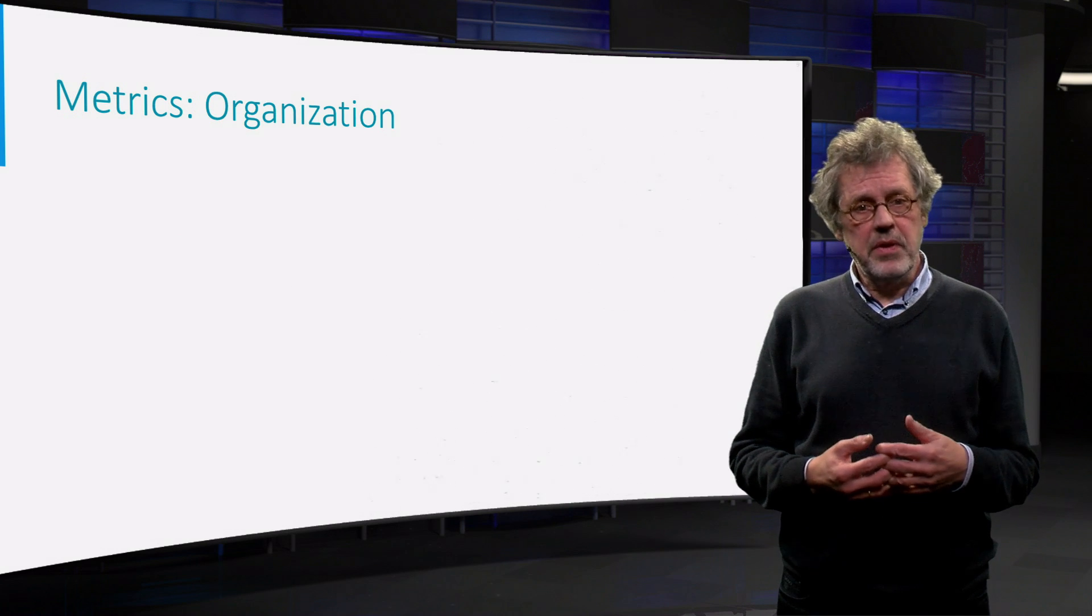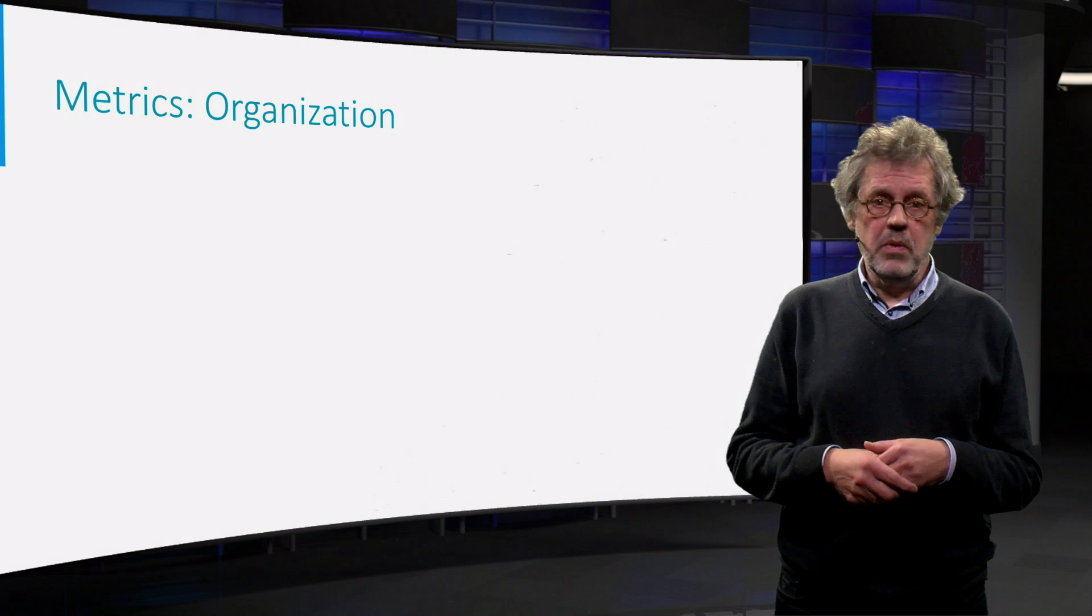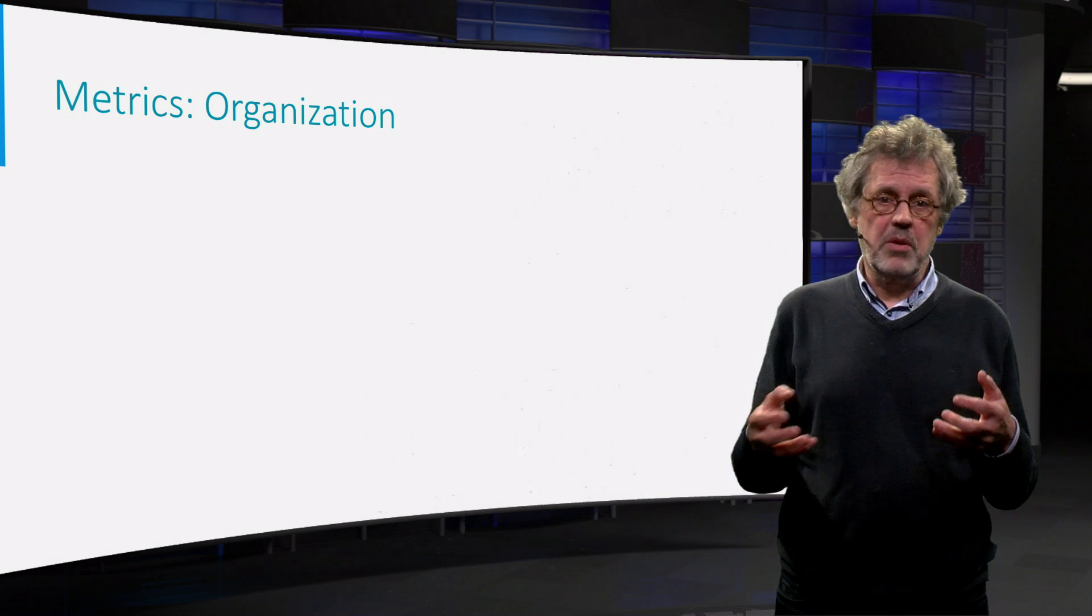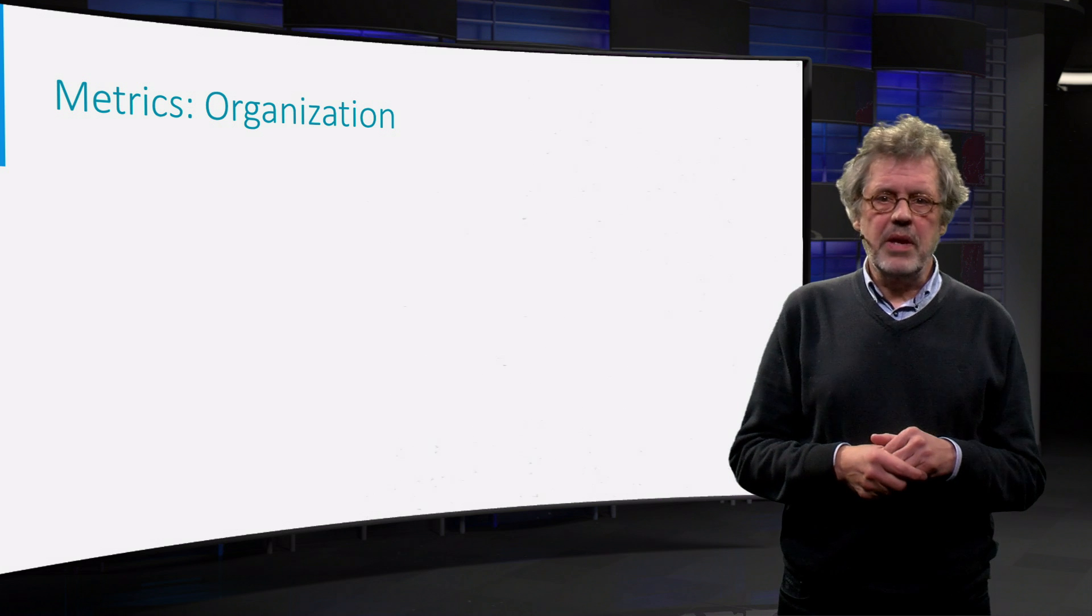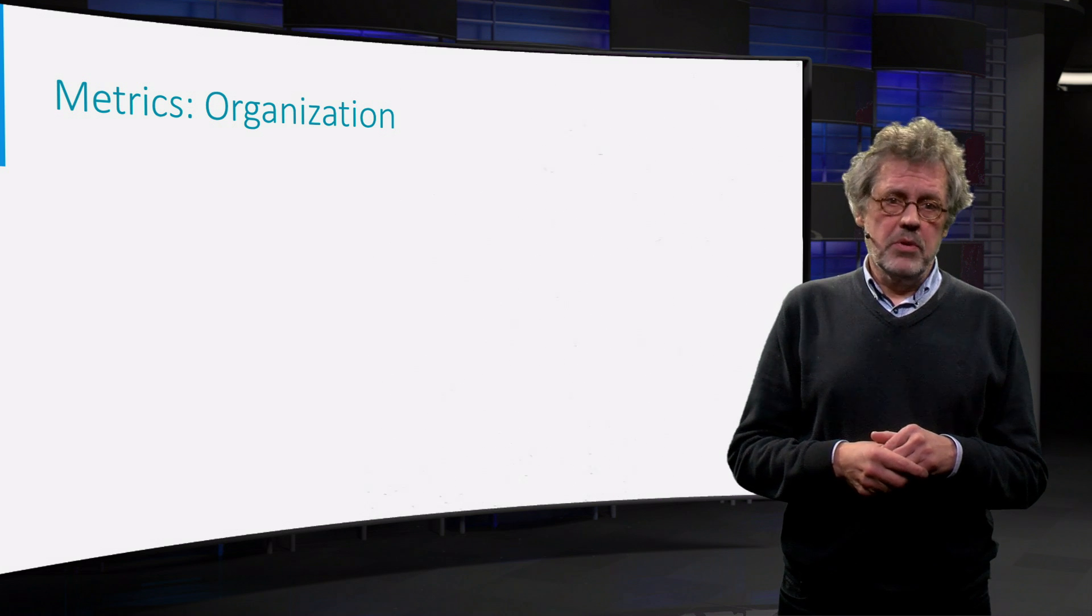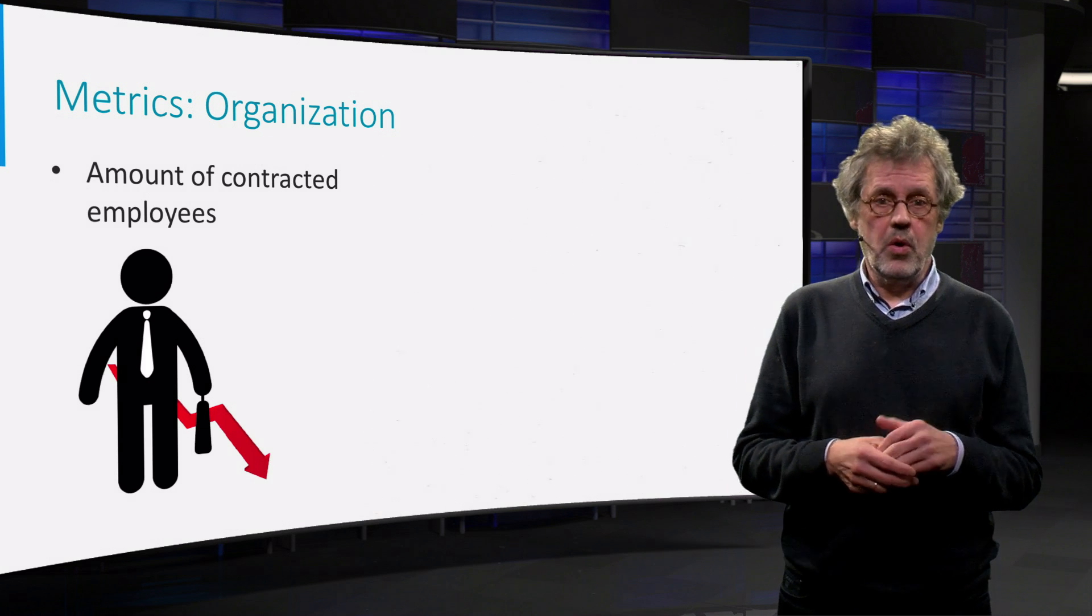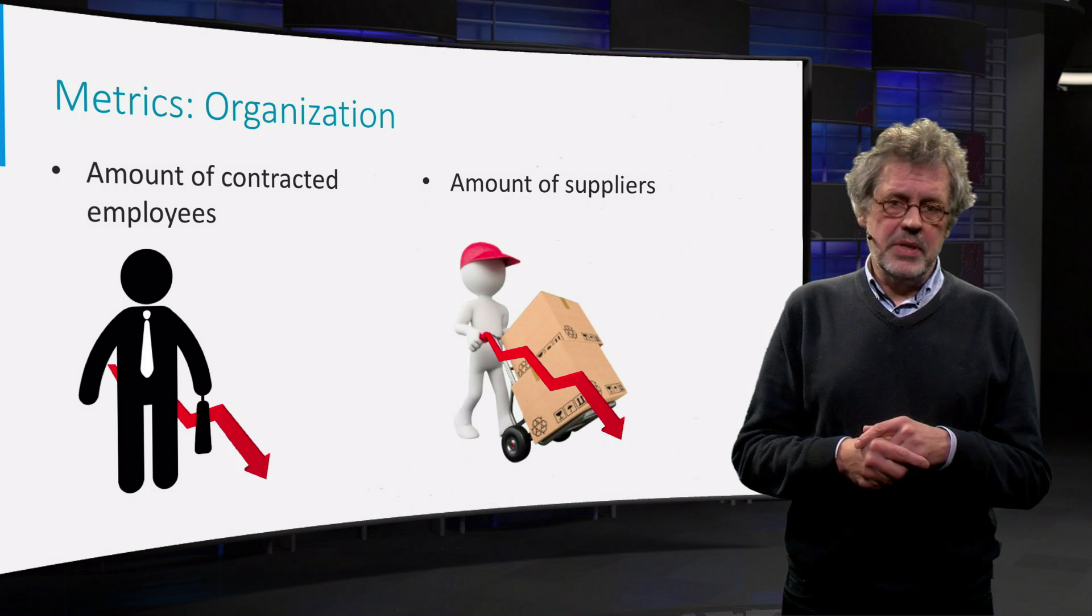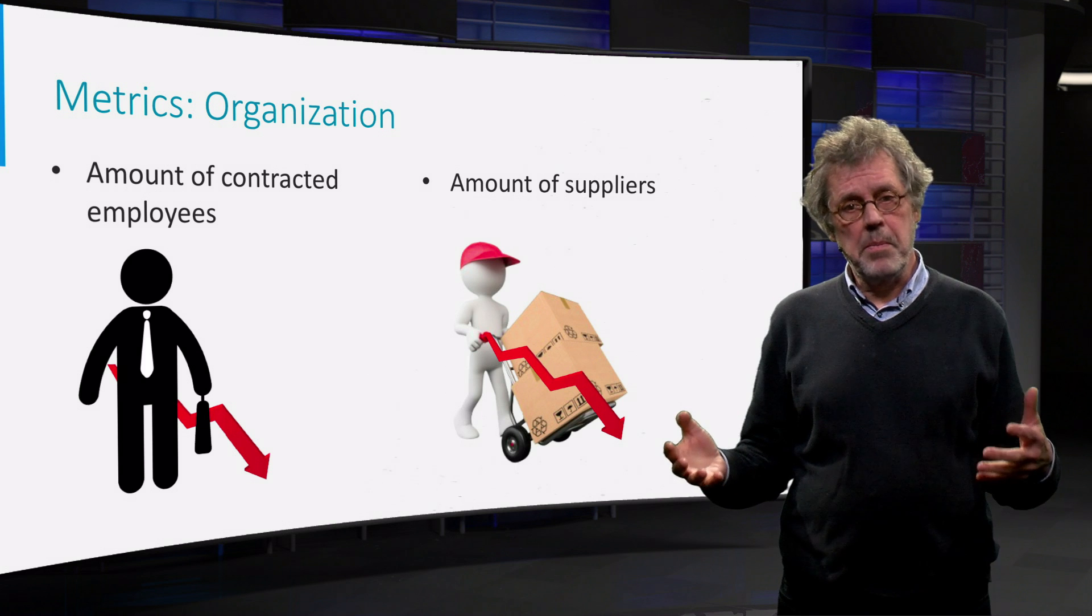Metrics can also be related to key activities within the organization. For example, the number of people needed with some specific skills, as for instance expressed in the proportion of marketing employees or the number of big data experts. Other examples are a reduction of the number of people temporarily hired, or a reduction of the number of suppliers. A classic example is Dell, that used to have 200 suppliers but succeeded to bring this number back to 50.